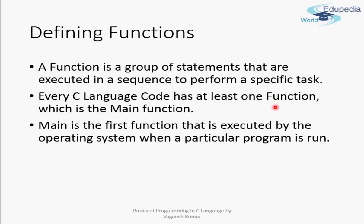Every C language code has at least one function, and it is mandatory — it is not possible to have a program running without one function. That function is known as the main function. The main function is the entry point of your program; it is the first function executed by the operating system when a program is run. If your program does not have a main function, you will not be able to compile an executable of it.